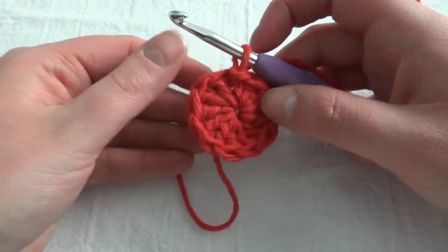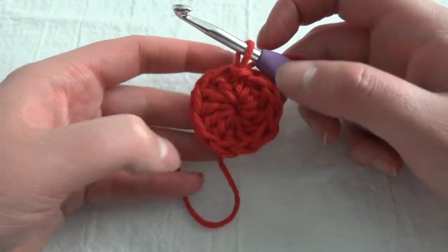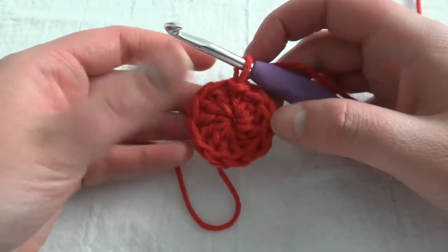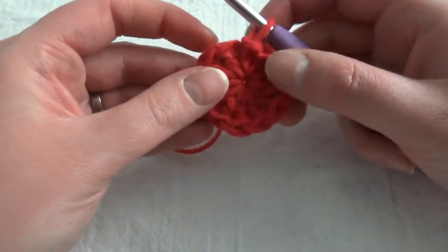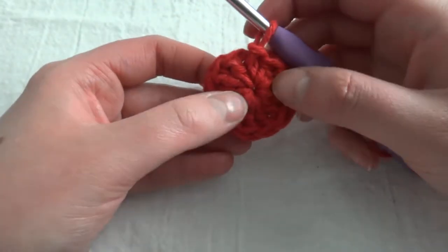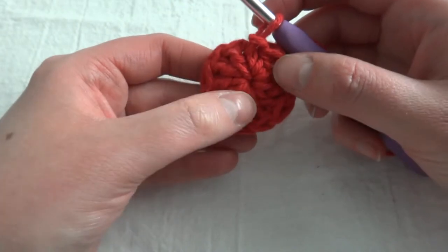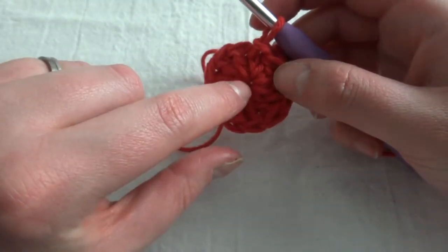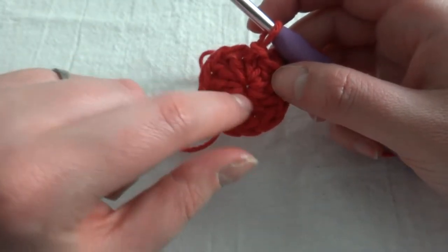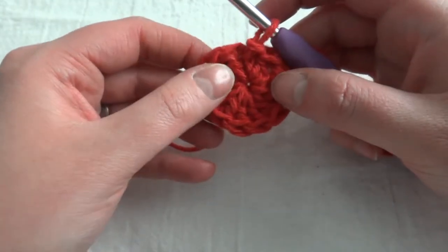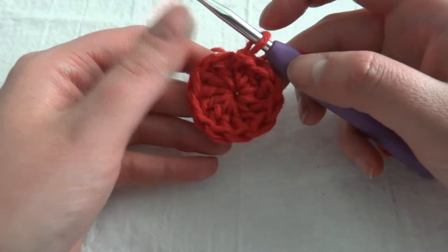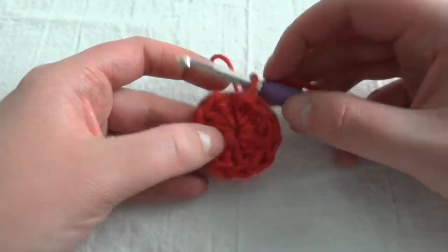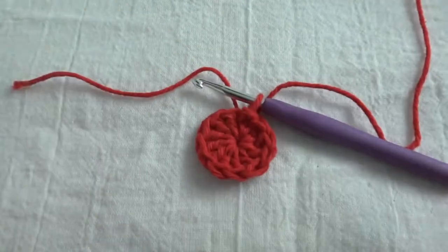So you could just leave this as a teeny circle if you wanted to or you can crochet on top of it to build any number of projects in the round. And if you look, your magic ring has made this hole in the center super small. If you had done like a chain four and then crocheted into that, your hole would be a lot bigger. So this is super cool to use. But that's it. That's all there is to the magic ring. Thanks for watching.